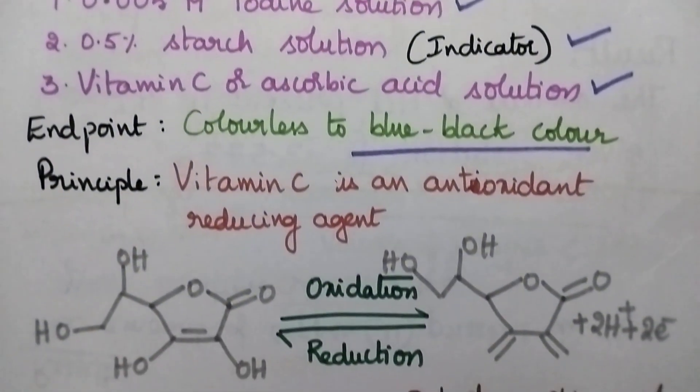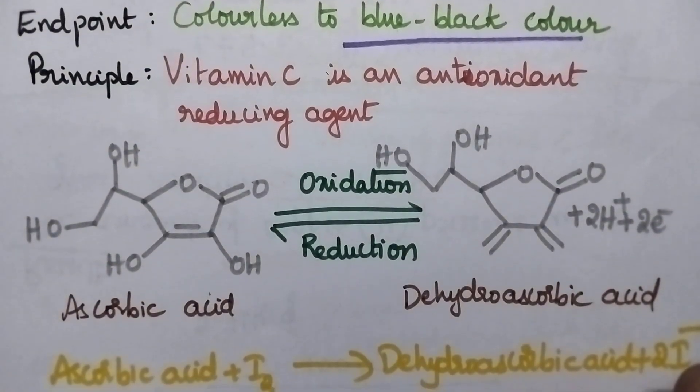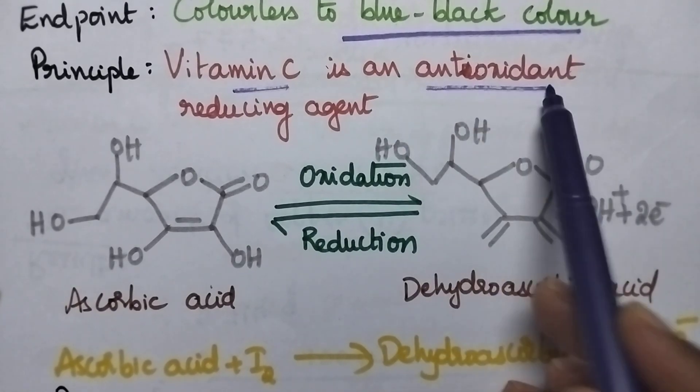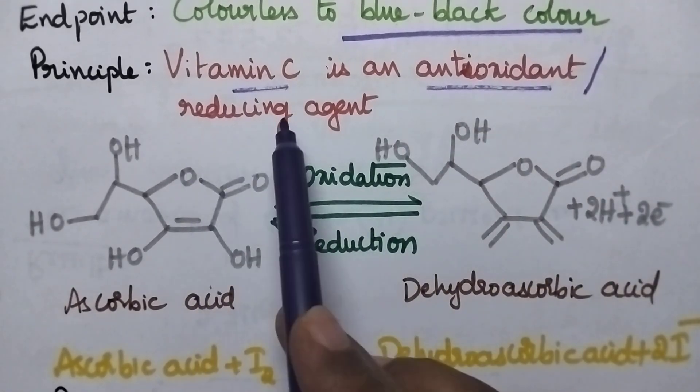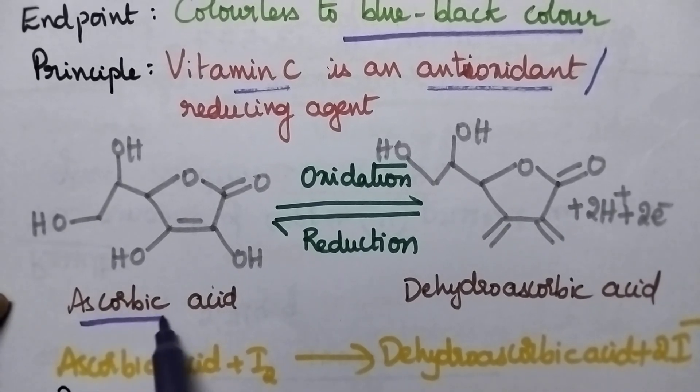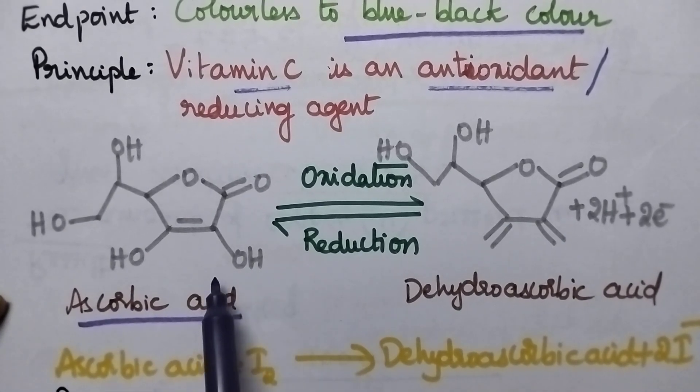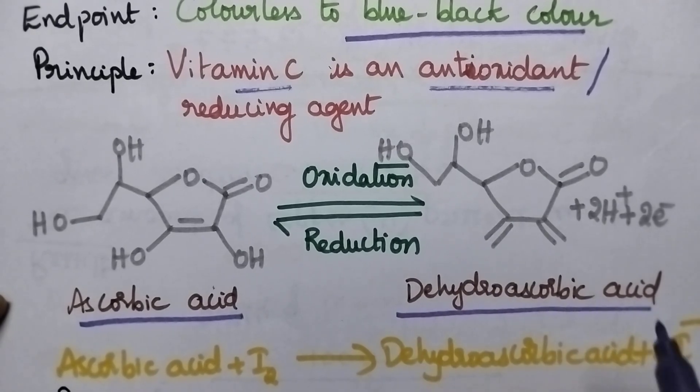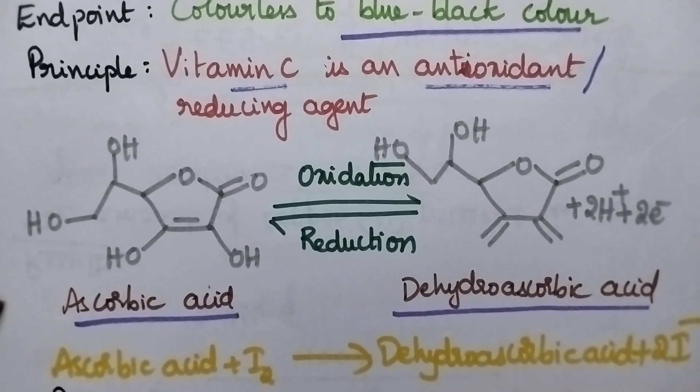Coming to the principle involved in the estimation of vitamin C, vitamin C acts as an antioxidant, that means it acts as a reducing agent. This is the chemical structure of ascorbic acid. It undergoes oxidation and results in the formation of dehydroascorbic acid.